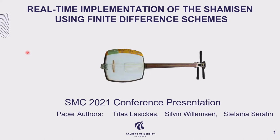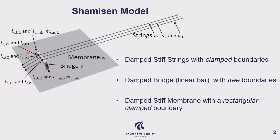To model a virtual instrument, finite difference schemes were used. The instrument itself is a combination of multiple parts. It is simplified to a couple of main parts, which are three strings, a bridge, and a membrane. The bridge is used to connect the strings and the membrane together, as you will see later in the demonstration.